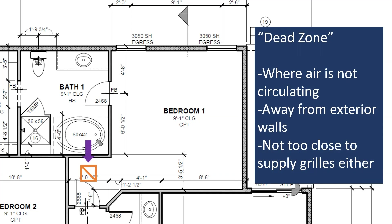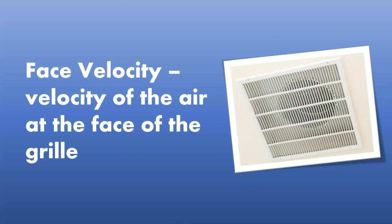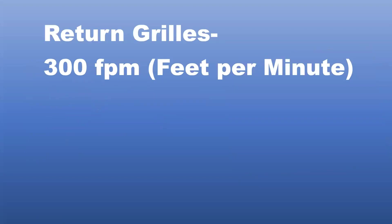One thing to note: per most codes, all grills — supply or return — need to be at least three feet away from smoke detectors, which is sometimes a conflict near the door, so just something to keep in mind. To determine what size our return grill needs to be, we first have to mention what face velocity we want for the return, which is the velocity of the air at the face of the grill. In order to keep noise levels low, we'd like to use a face velocity for the return of 300 feet per minute.